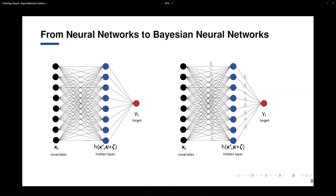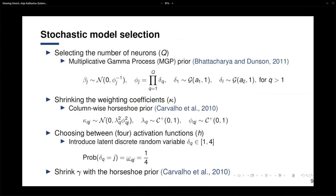Bayesian neural networks per se are not entirely new — they are also popular in the deep learning literature because they help safeguard against overfitting. What is new, to the best of our knowledge, is our approach to model selection. We use a shrinkage prior to determine the number of neurons — starting with a large set of covariates and a large set of neurons, then shrinking them using a multiplicative gamma process prior from Bhattacharya and Dunson, which imposes increasing shrinkage with an increasing number of factors.